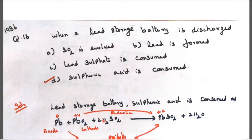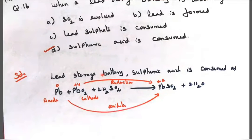Come to the next decision of series, 1986 question number 16. When a lead storage battery is discharged: SO2 is released, lead is formed, lead sulphate is consumed, or sulphuric acid is consumed. Lead storage battery, sulphuric acid is consumed.